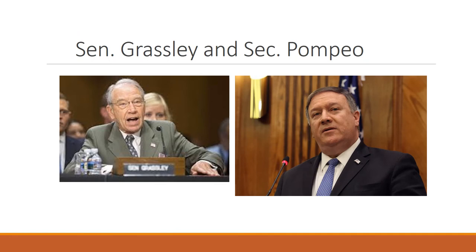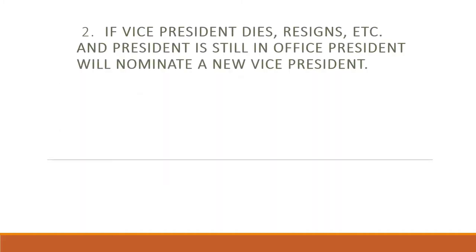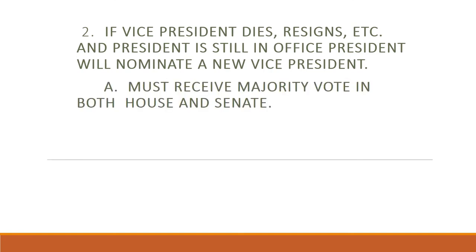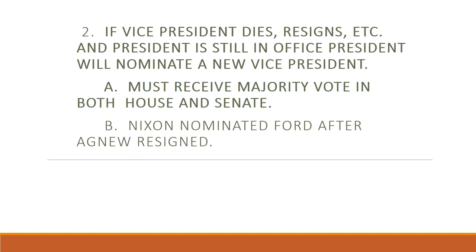Senator Grassley is a Republican from Iowa often seen yelling about things in the Senate, and Secretary Mike Pompeo, who also used to run the CIA, is one of Trump's top men. If the vice president dies or resigns, the president will nominate a new vice president. That person has to receive a majority vote in both the House and the Senate in order to be confirmed.